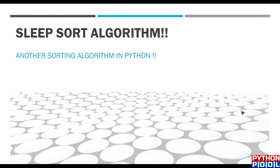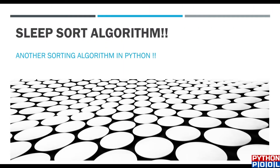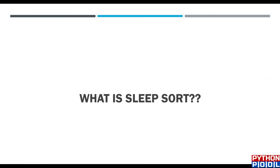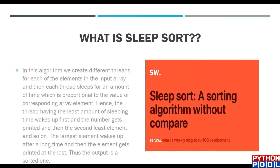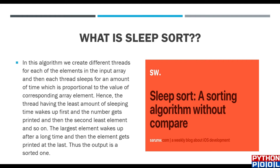Hey everyone, welcome to another video by Python2. In this video we're going to see the Sleep Sort algorithm. Sleep Sort is an algorithm which doesn't compare elements in the list — it just sleeps each element according to a timer and wakes them up when all elements have been slept, producing them in sorted order, then prints the list.